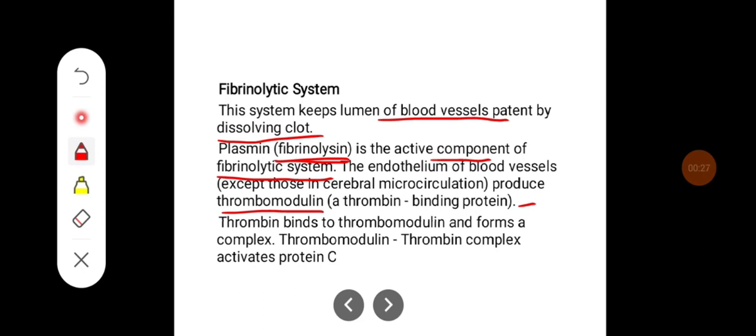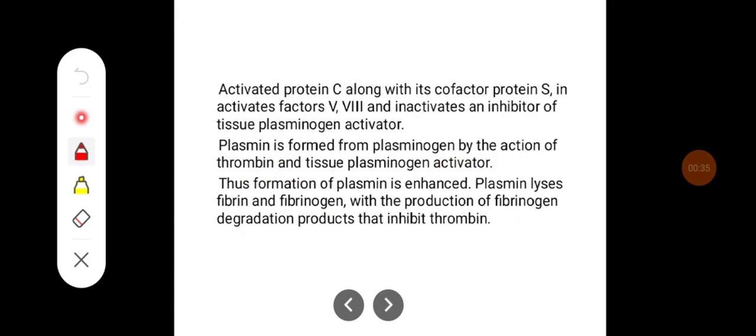Thrombin binds to thrombomodulin and forms a complex. This thrombomodulin-thrombin complex activates protein C. Activated protein C along with cofactor protein S inactivates factors 5 and 8, and inactivates an inhibitor of tissue plasminogen activator.